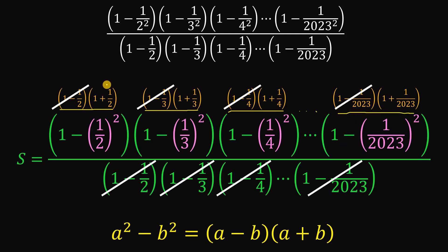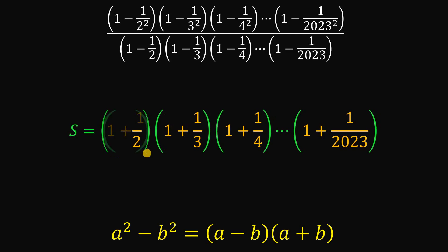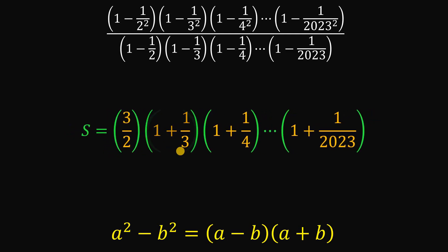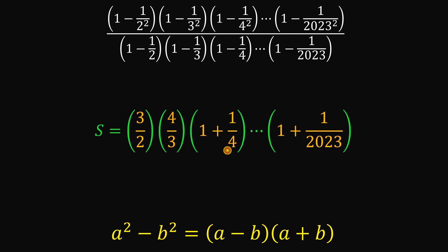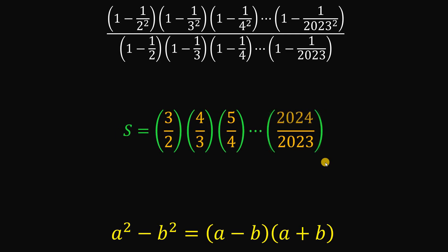What's left is 1 plus 1 half, 1 plus 1 third, 1 plus 1 fourth, all the way down to 1 plus 1 over 2023. Simplifying each: 1 plus 1 half gives 3 over 2, 1 plus 1 third gives 4 over 3, 1 plus 1 fourth gives 5 over 4, and so on, until 1 plus 1 over 2023 gives 2024 over 2023.